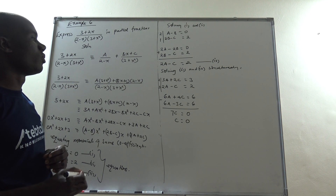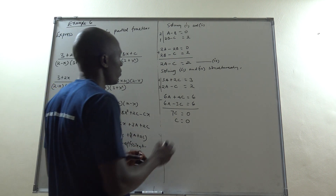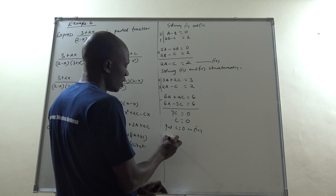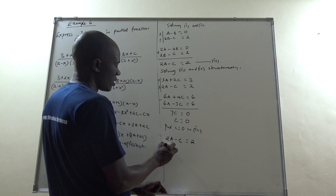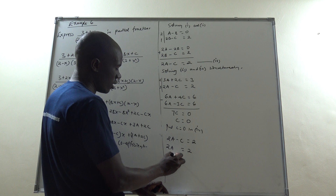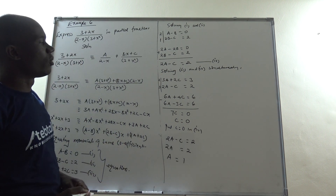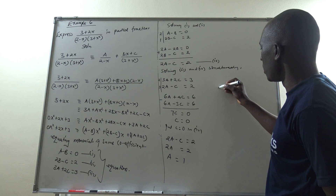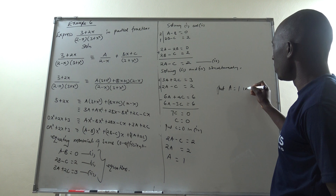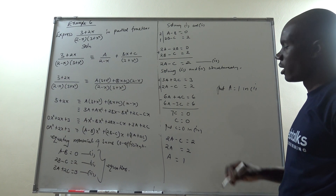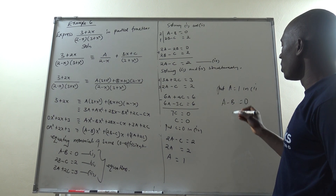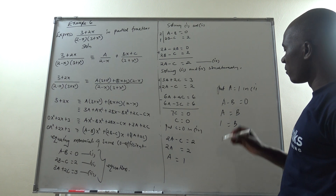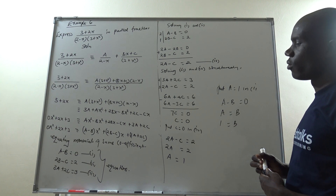Substituting C = 0 into equation (4): 2A − 0 = 2, so A = 1. Then substituting A = 1 into equation (1): 1 − B = 0, giving B = 1. We now have all three unknowns: A = 1, B = 1, C = 0.